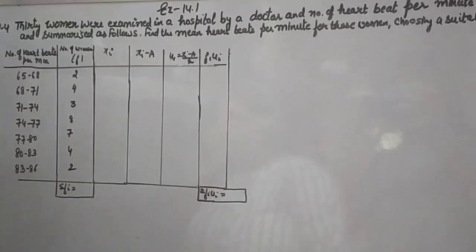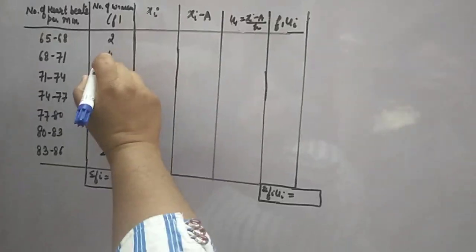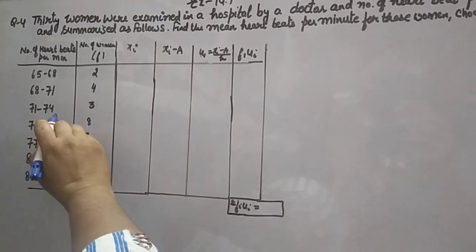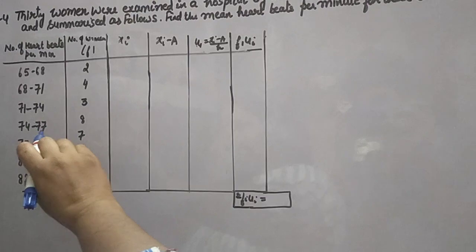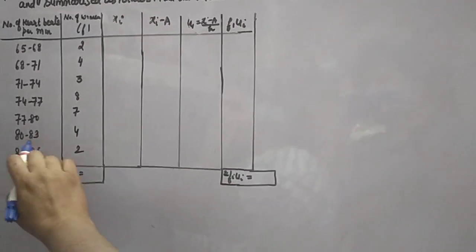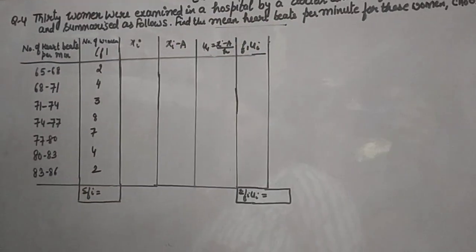In the data, 2 women's heartbeat was 65 to 68 per minute, 4 was 68 to 71 per minute, 3 was 71 to 74 per minute, 8 was 74 to 77, 7 was 77 to 80, 4 was 80 to 83, and 2 was 83 to 86. We have to find the mean heartbeat per minute.